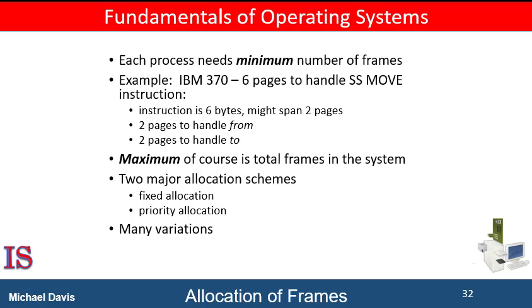Our strategies for the allocation of frames are constrained in various ways. For example, we only allocate more than the total number of available frames if there is page sharing. We must also allocate at least a minimum number of frames. One reason for allocating at least a minimum number involves performance. As the number of frames allocated to each process decreases, the page fault rate increases, slowing process execution. Also, when a page fault occurs before an instruction is complete, the instruction must be restarted. This suggests that we must have enough frames to hold all the different pages that any instruction can reference.